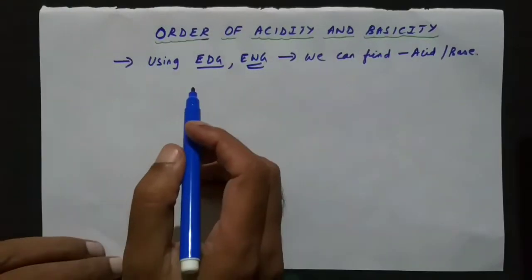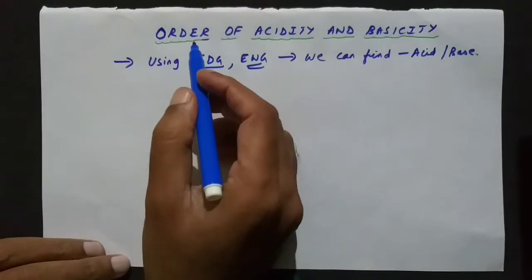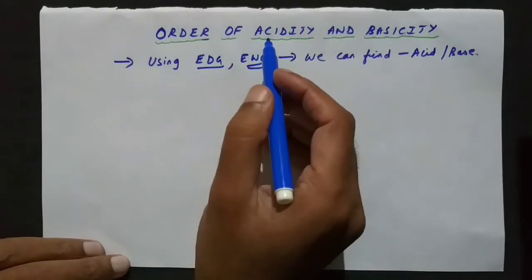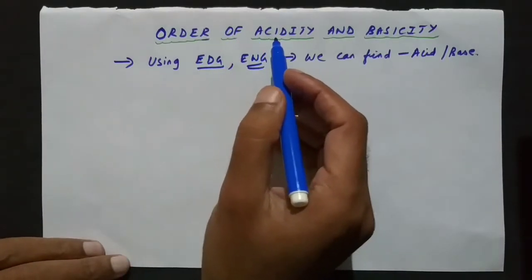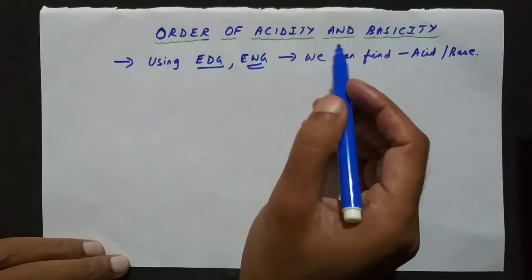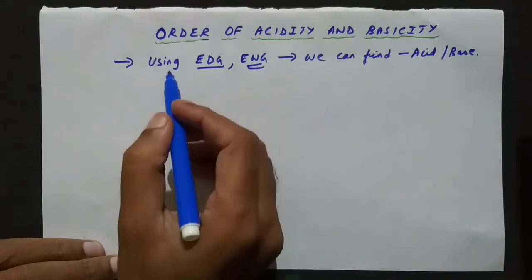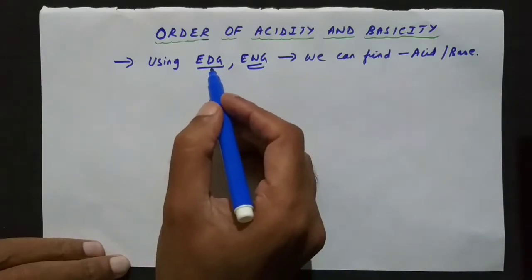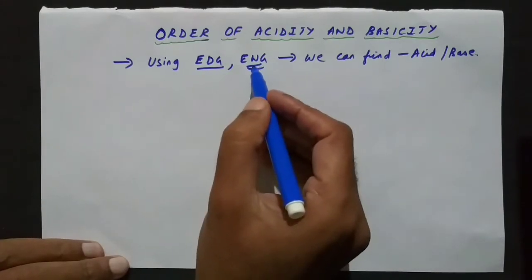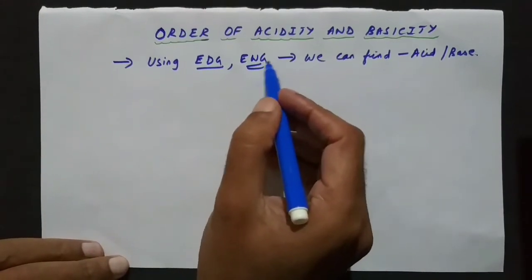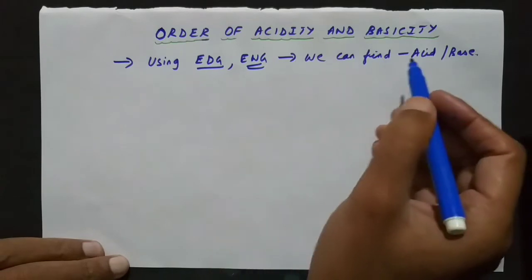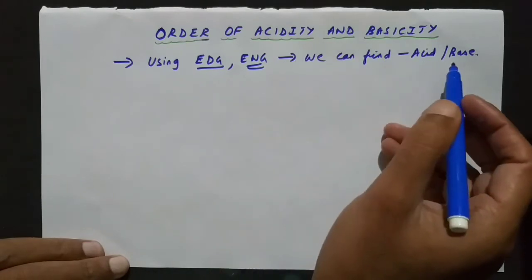In this video, I will discuss the order of acidity and basicity. Using electron-donating groups or electron-withdrawing groups, we can find out whether the compound is acidic or basic.